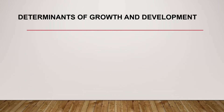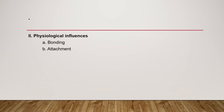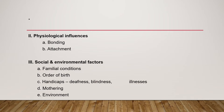There are different conditions that affect growth and development. Biologic influences include genetic conditions, intelligence, prenatal and postnatal conditions, gender, hormonal influence, and the child's temperament. Overall, girls tend to learn to walk, speak, and acquire sphincter control earlier than boys. Physiologic factors include bonding and attachment between the child and the family. Social and environmental factors such as family conditions, order of birth, presence or absence of handicaps like deafness or blindness, and environmental conditions also affect growth and development.